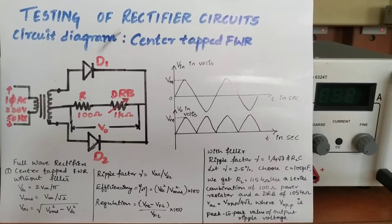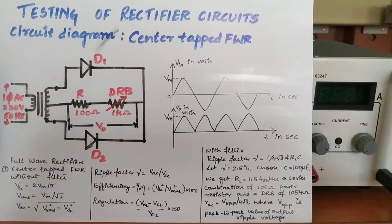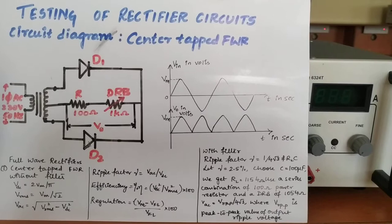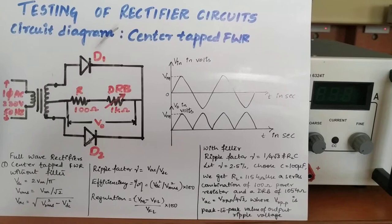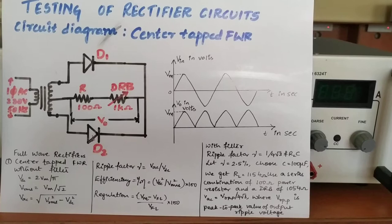A rectifier circuit is one which converts an alternating waveform of energy into a unipolar pulsating DC, and which uses a diode circuit. We know that a diode is a semiconductor device and it conducts only in one direction. This property of the diode will be utilized in the designing of the rectifier circuit.